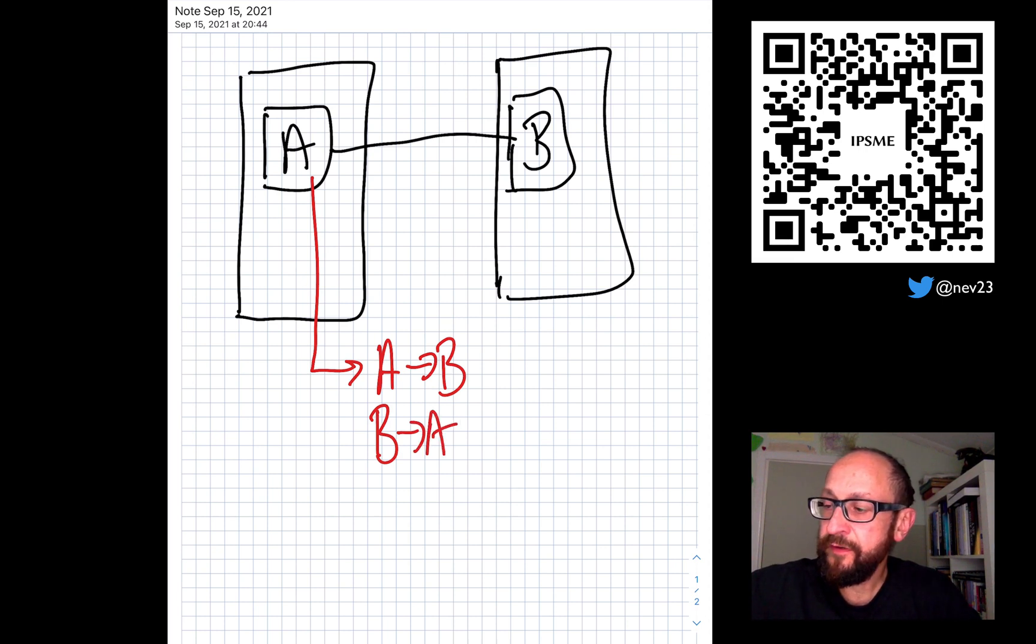If then B updates to B prime, then the component A would have to be shut down and then re-engineered, which requires cost, and then the translation would then have to be done from B prime to A and back.